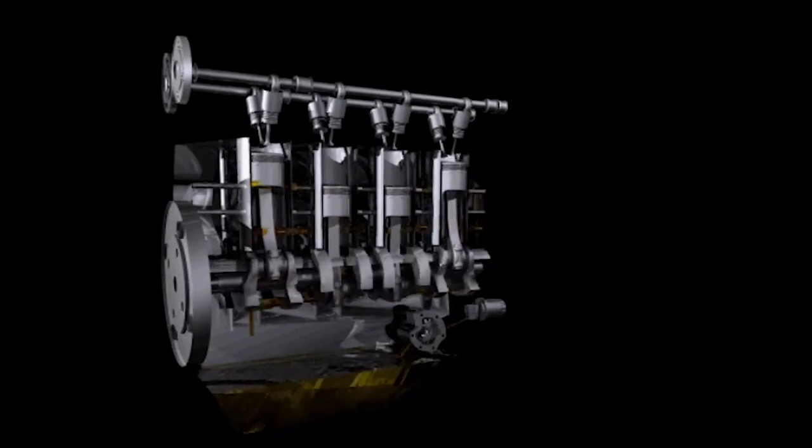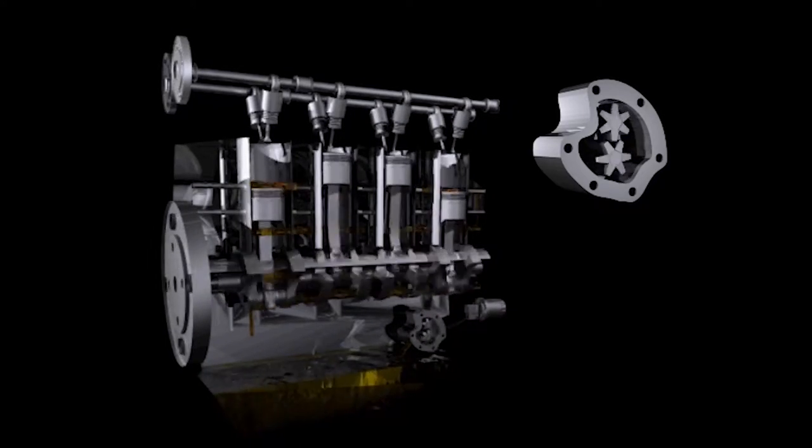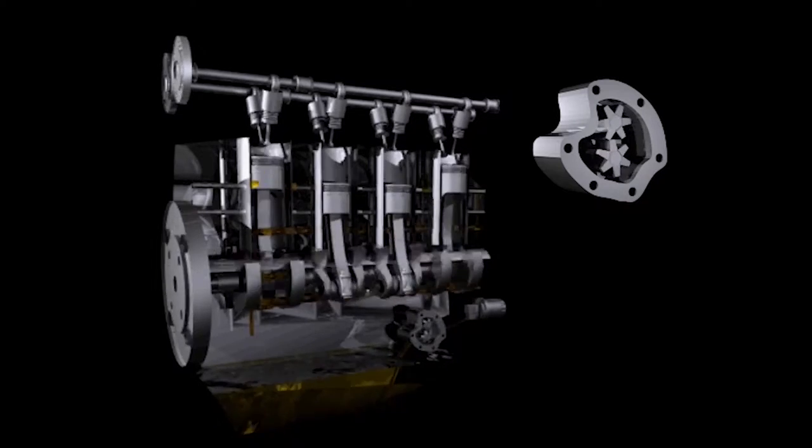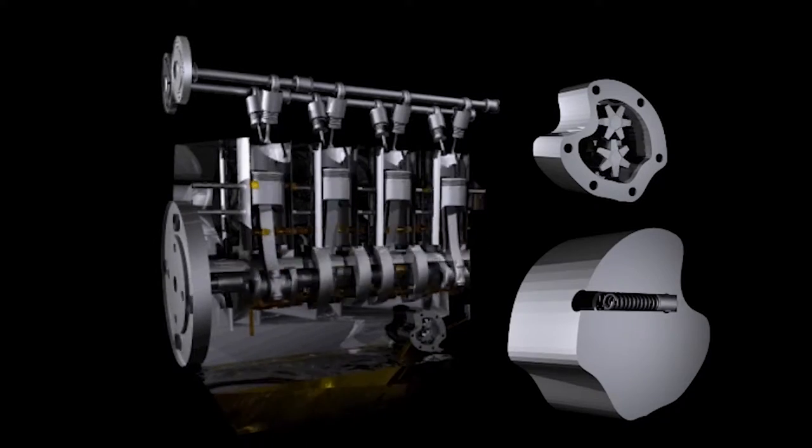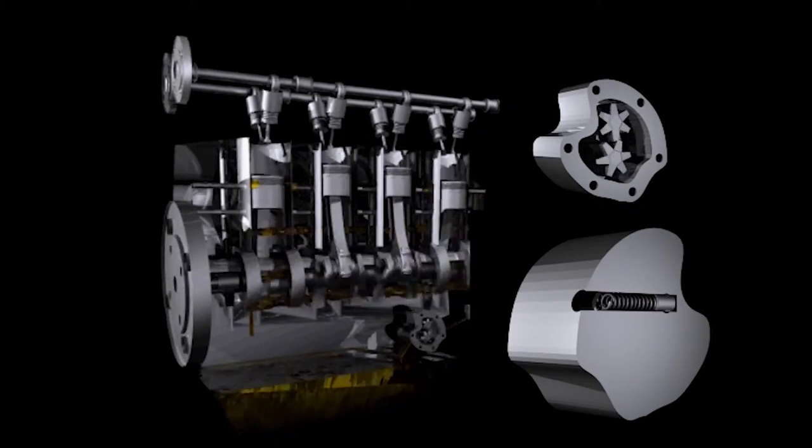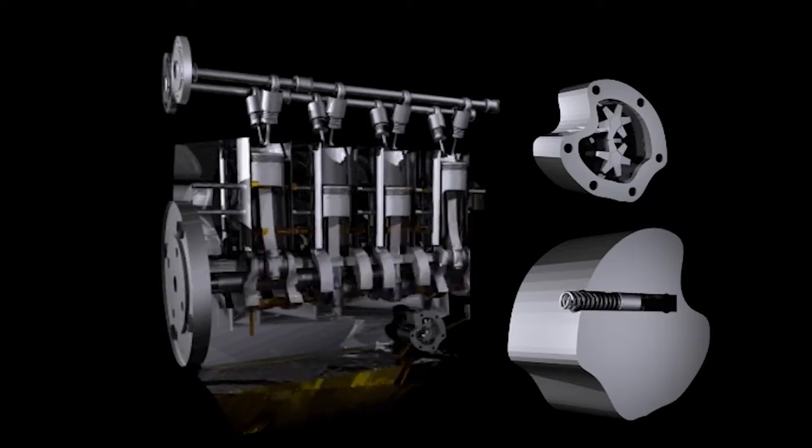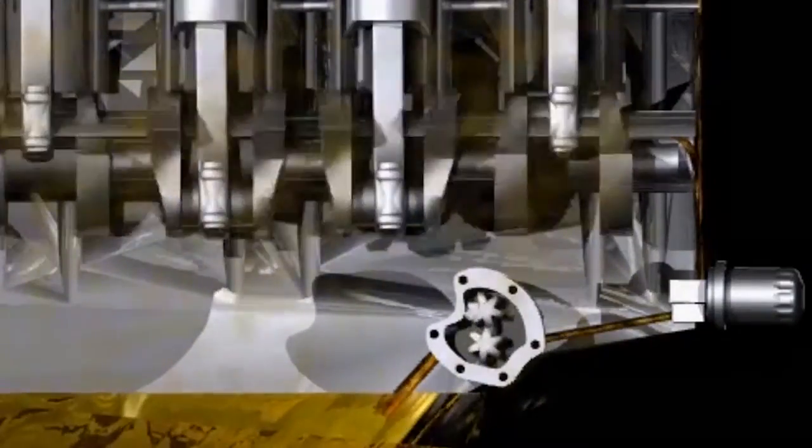In most systems, a pump forces pressurized lubricant through a filter into various engine components. A pressure relief valve, which is usually located in the oil pump, regulates the volume of lubricant that is allowed to flow through the system.